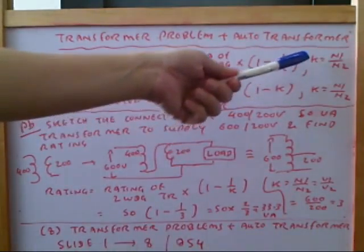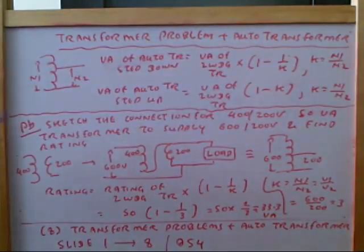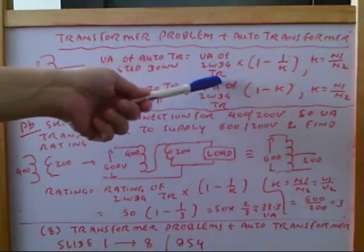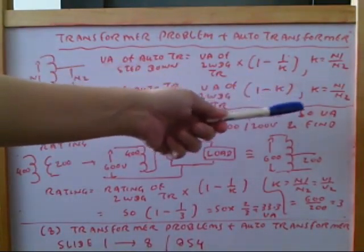K equals N1 by N2. VA of the auto transformer step up, this is the VA of the two winding transformer multiply 1 minus 1 by k, k is equal to N1 by N2.